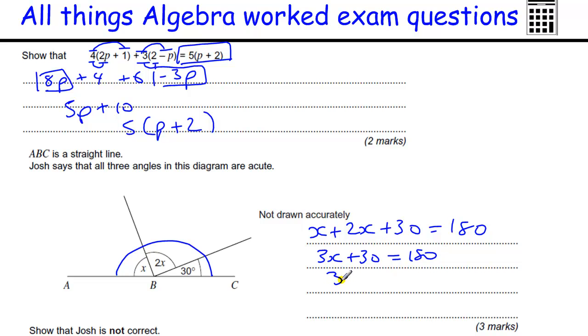Take away the 30, we get 3X equals 150. So that means 1X divided by 3, 150 divided by 3 is 50. So this angle is 50. 2X is 100. So this angle is not acute. Okay, an angle greater than 90, less than 180 is obtuse.